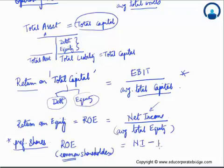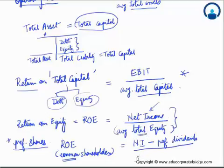The modification is: the numerator becomes net income minus preferred dividends — which is similar to what we saw when calculating EPS. And when we talk about total equity, we modify it to average common equity, so only the portion accruing to common shareholders is considered. Remember there is a slight tweak and you must take into account the preferred dividends which need to be subtracted.